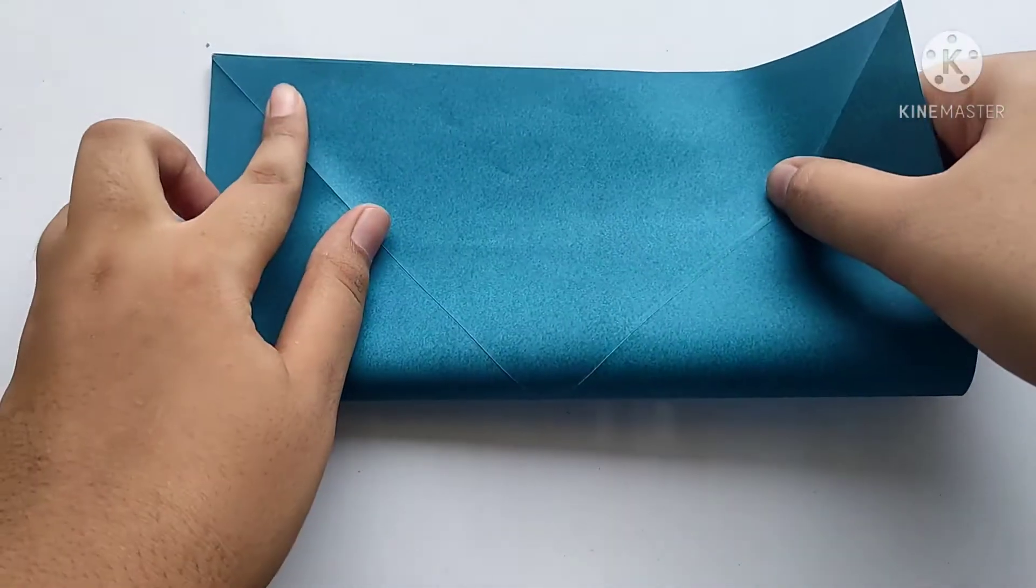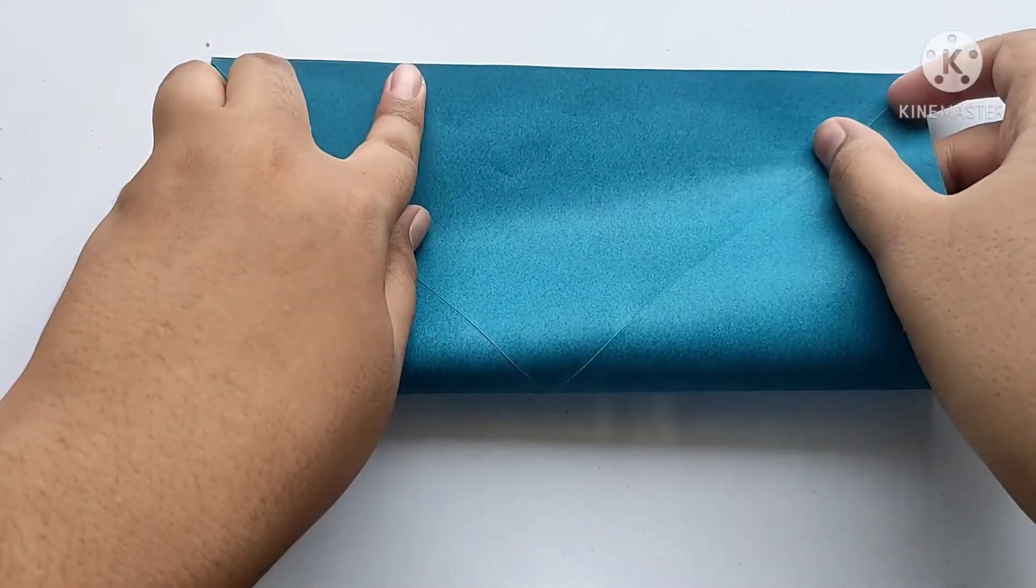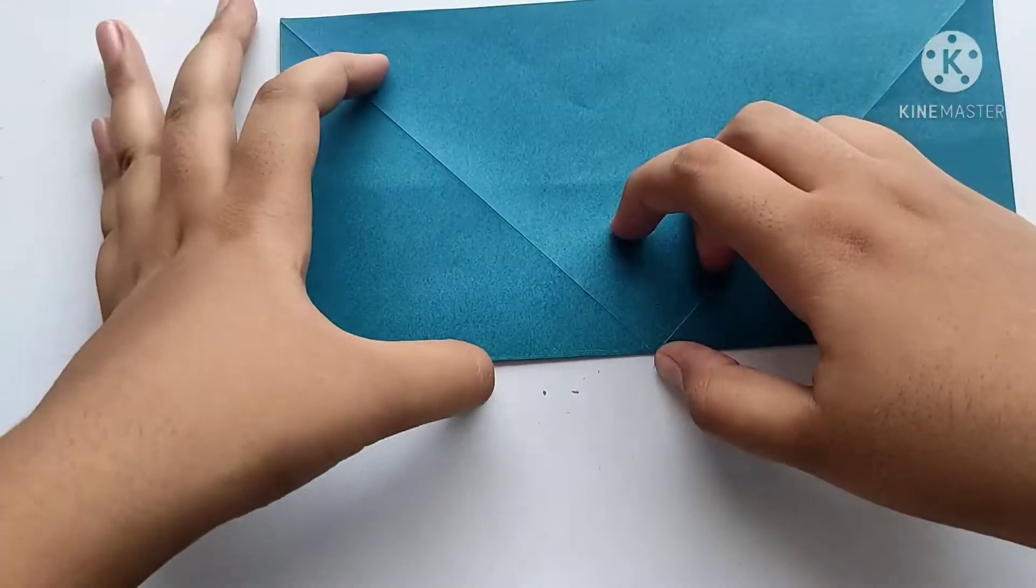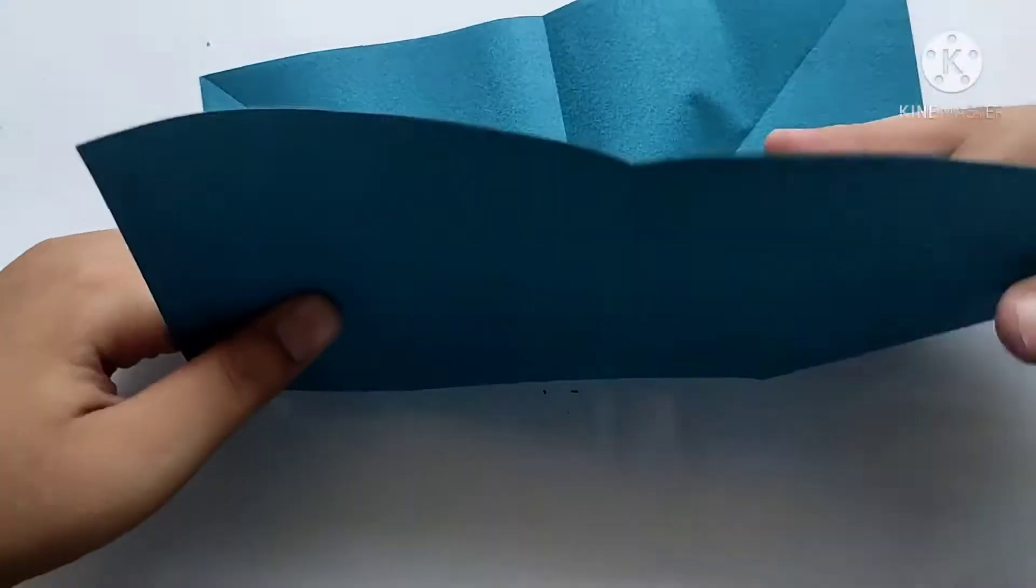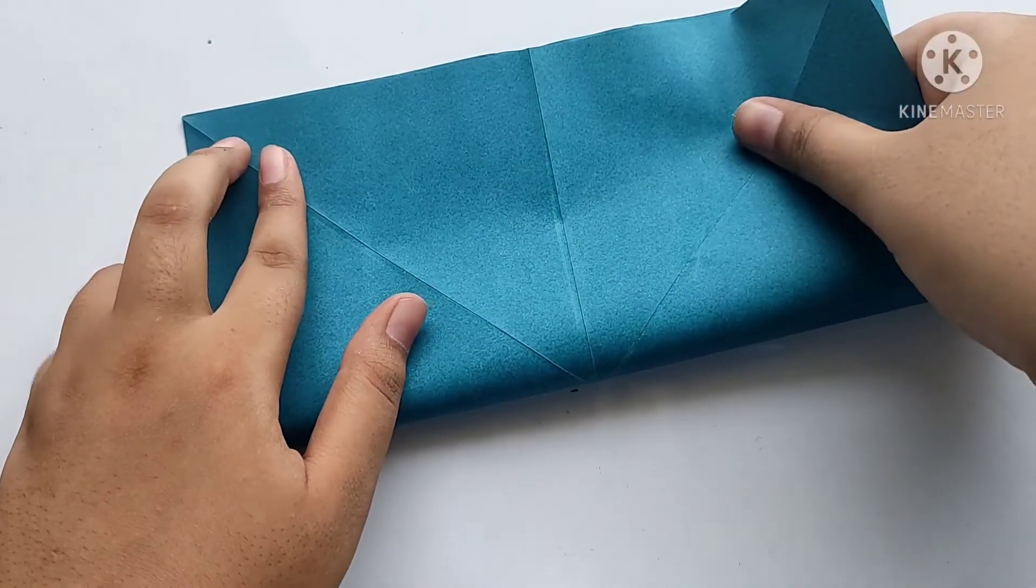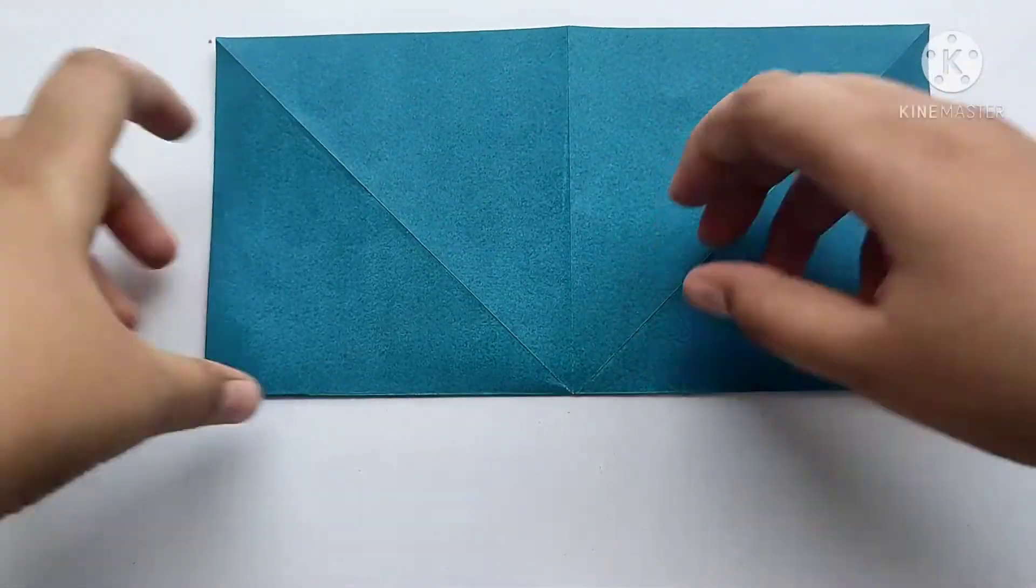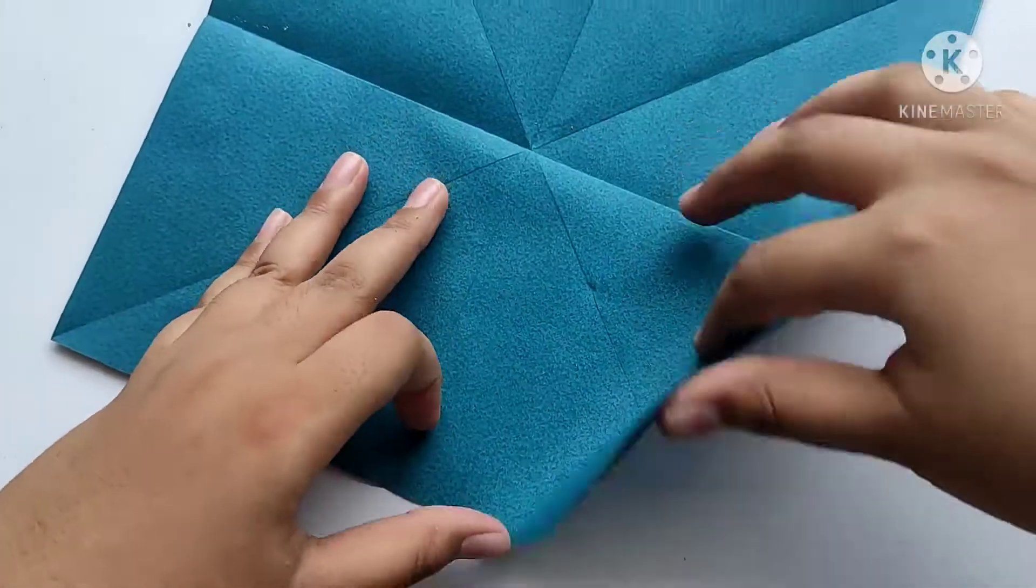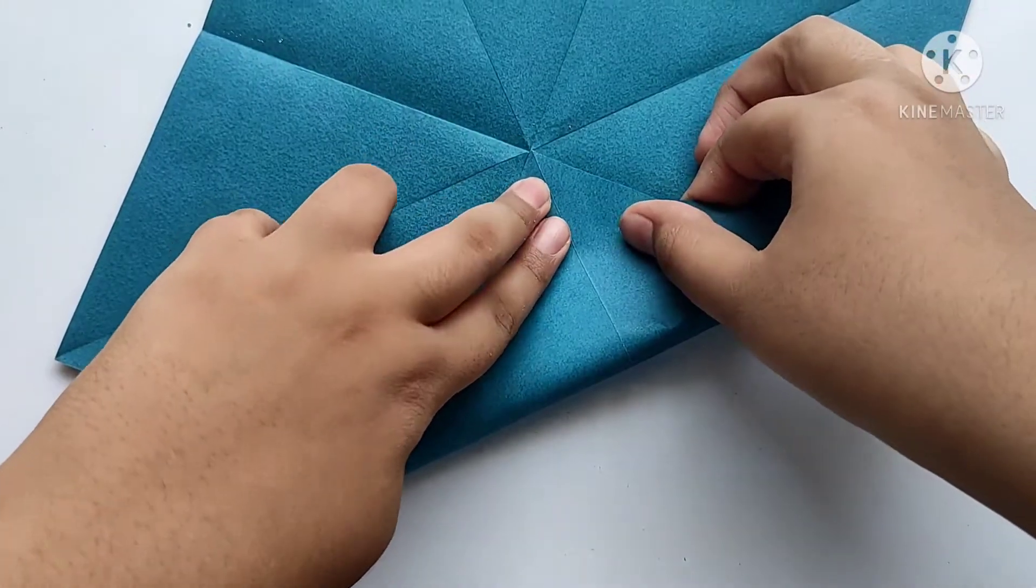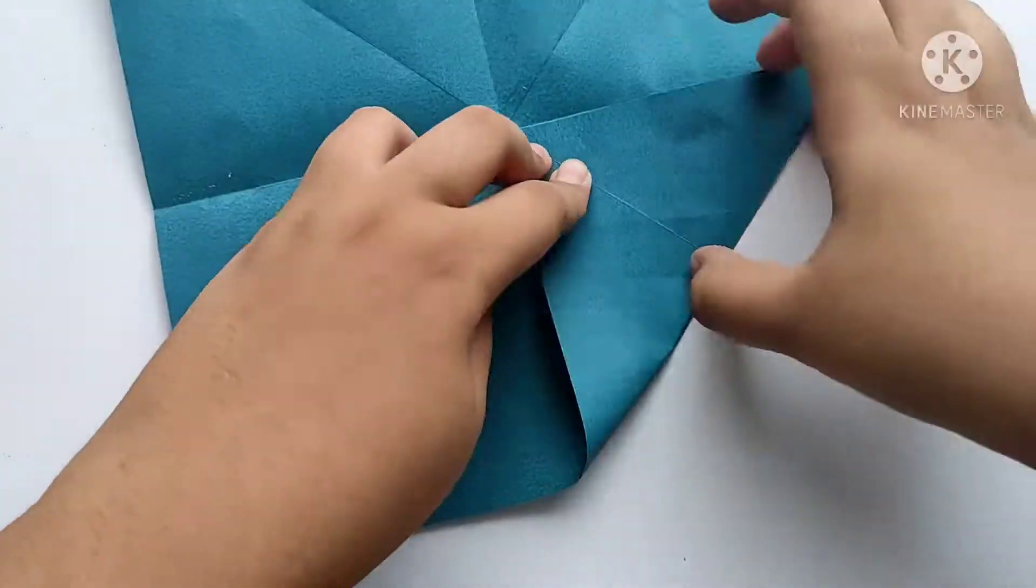Now we need to fold half along the square and another half. After folding another half, we need to fold all the sides to the center point like this.